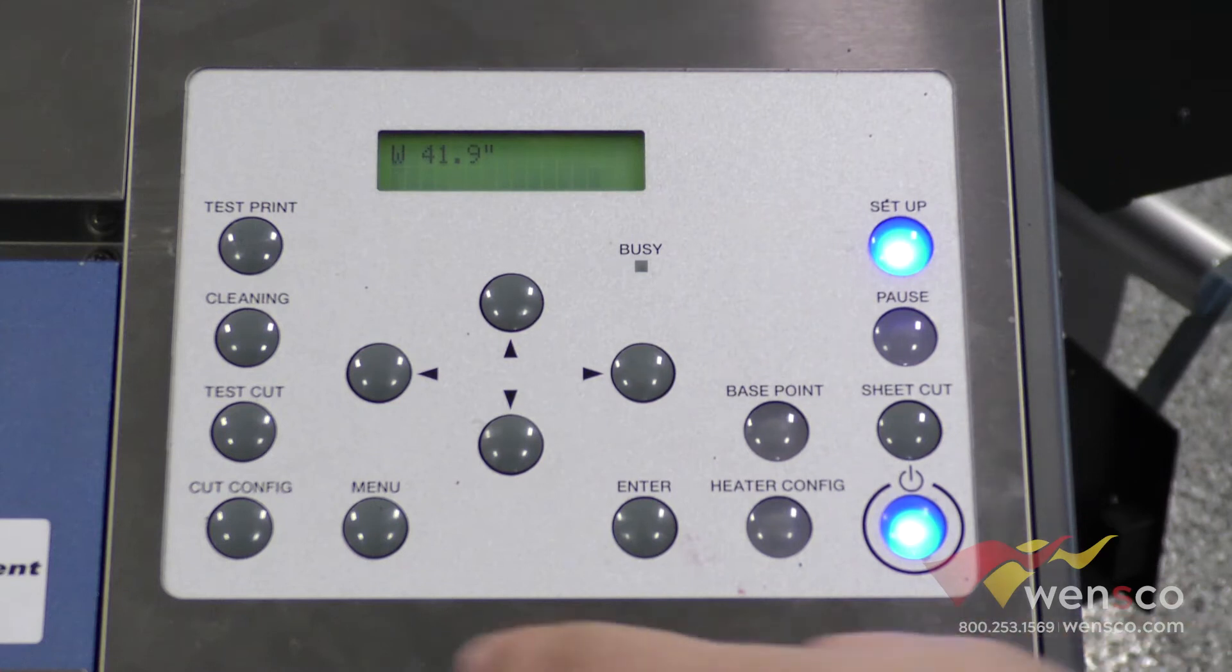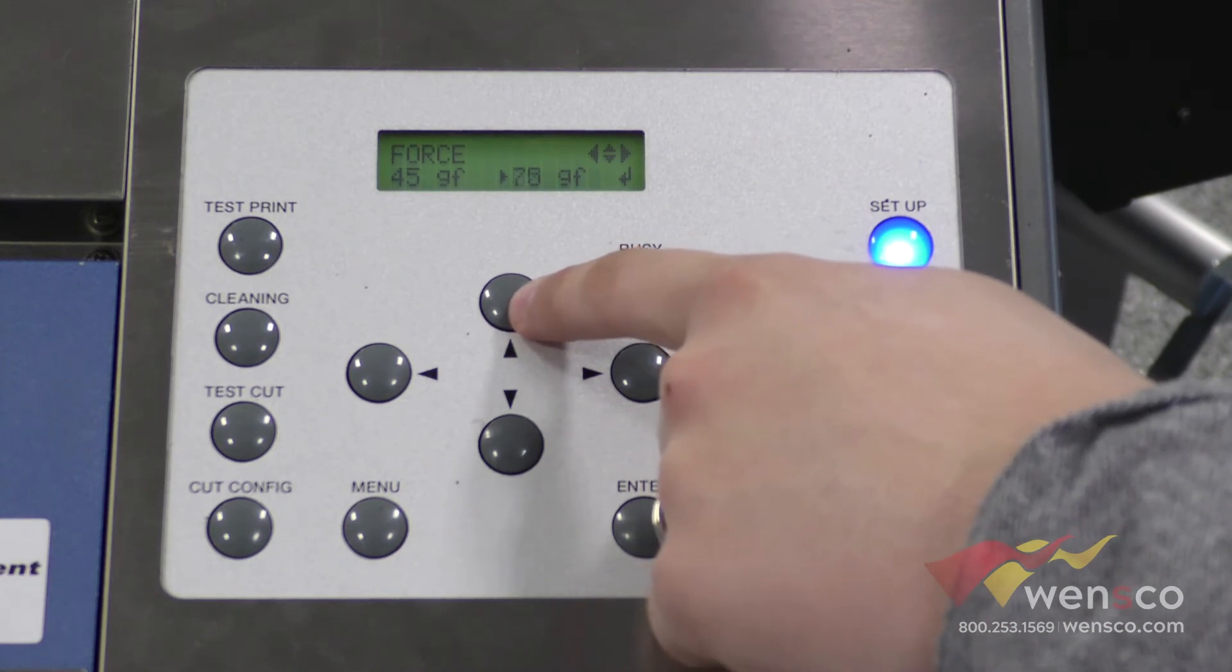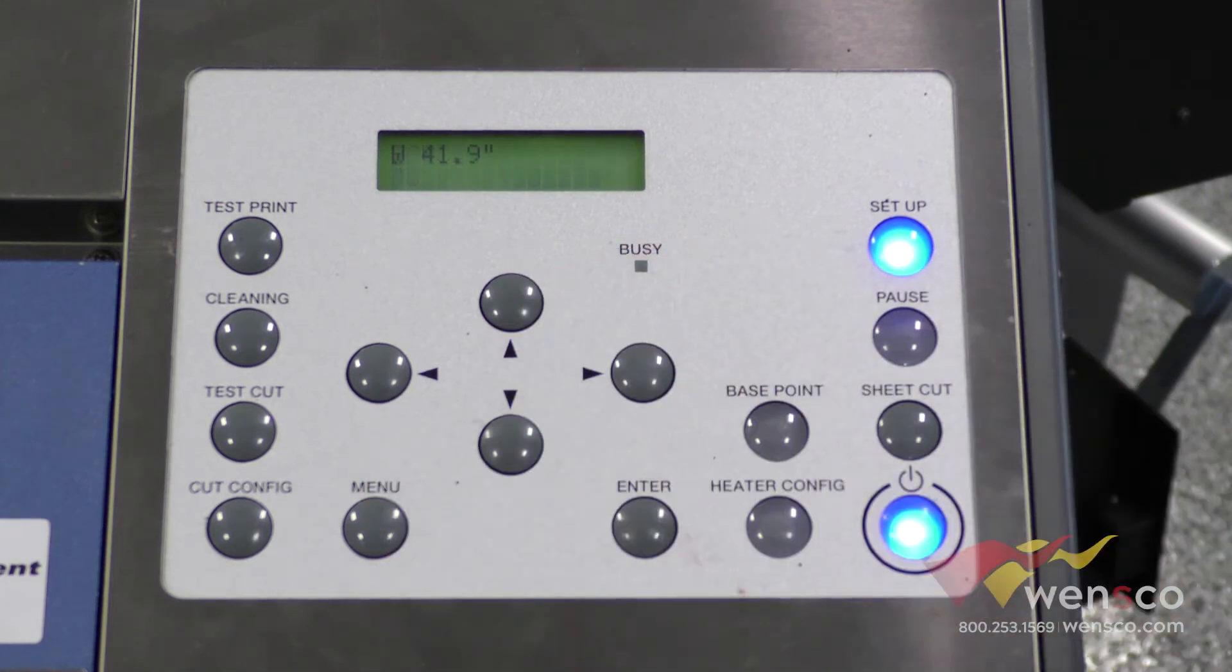If we're going to make any changes to the test cut, we're going to go into the cut configuration menu from here. Like I said, 90 grams of force was perfect for us. We'll go up to 90, hit enter. It's going to bring us back to the main menu here, but when you see if we go back into cut configuration it's set to 90 now.